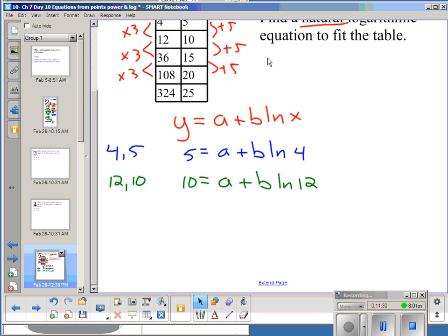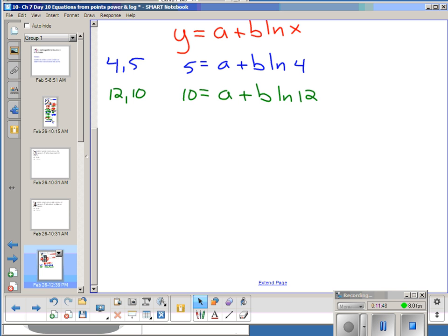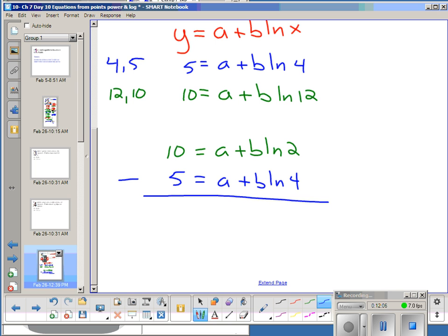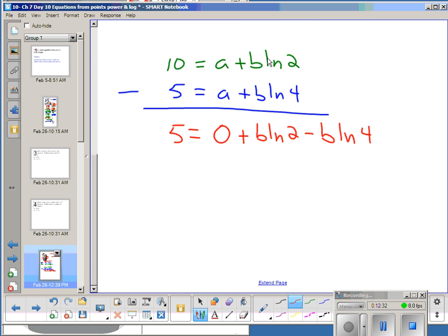Now, unlike in the power model or the exponential model, I would like to eliminate A, but it's not connected to the part with the B in it by multiplying, it's connected by adding. So instead of dividing my two equations, I'm going to add or subtract. I, again, generally like to end up with positive numbers. So I'm going to take my 10, and I'm going to take this equation, and I'm going to subtract my other equation. Okay, so I'm going to subtract, so when I take 10, and I subtract 5, I get 5. When I take A, and I subtract A, I get 0, and I'm going to take BLN2, and I'm going to subtract BLN4. So now I have an equation that has only one variable. My variable is B.